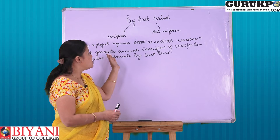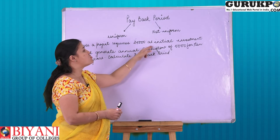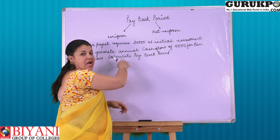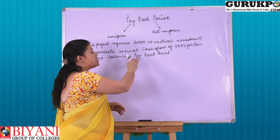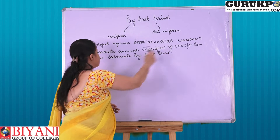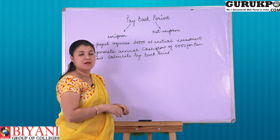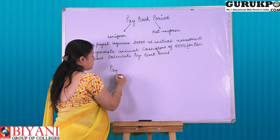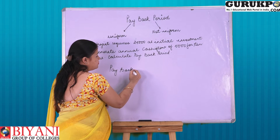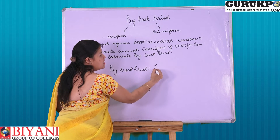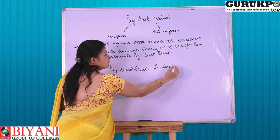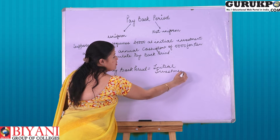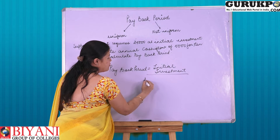Here the question is: suppose a project requires 25,000 rupees as initial investment and generates an annual cash flow of 5,000 for each and every year for 10 years. Calculate the payback period. For payback period, the formula is: initial investment divided by annual cash inflow.